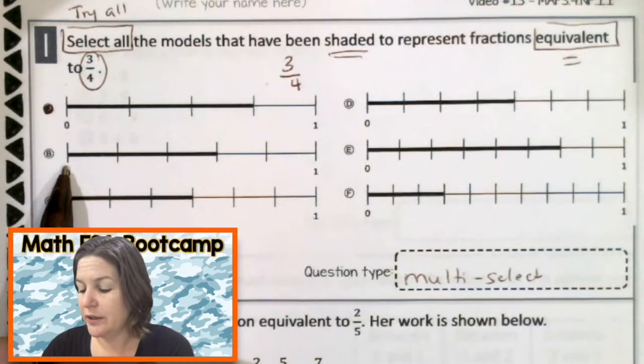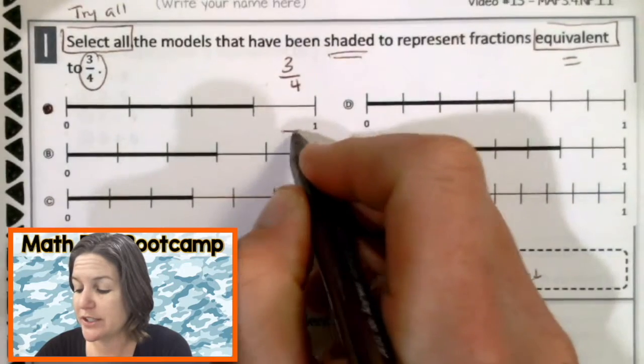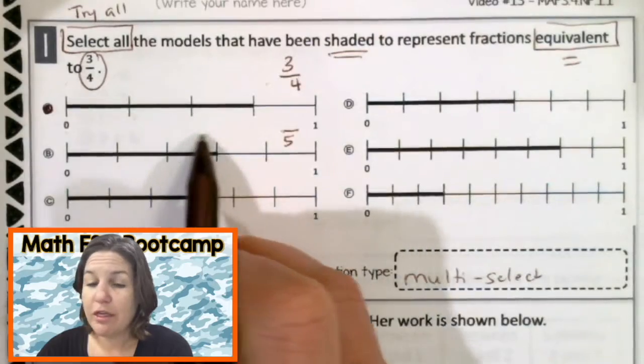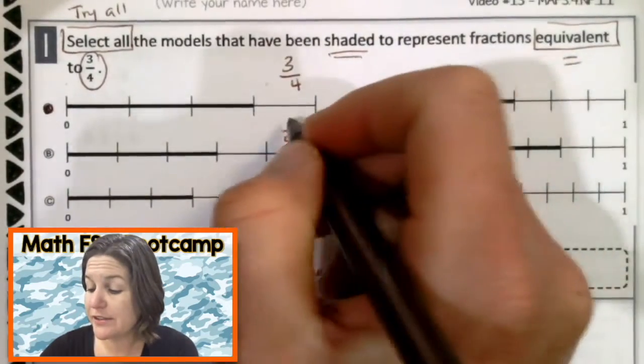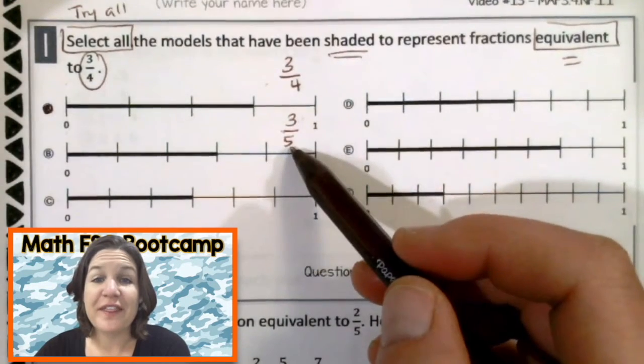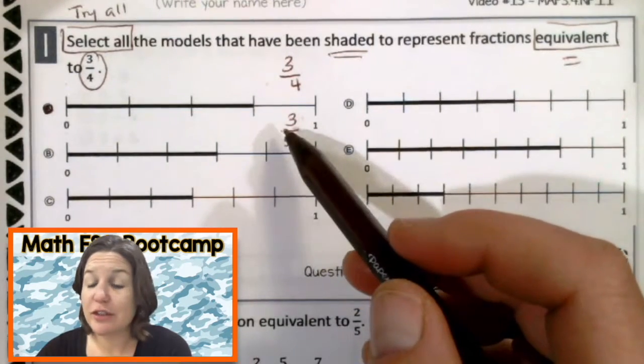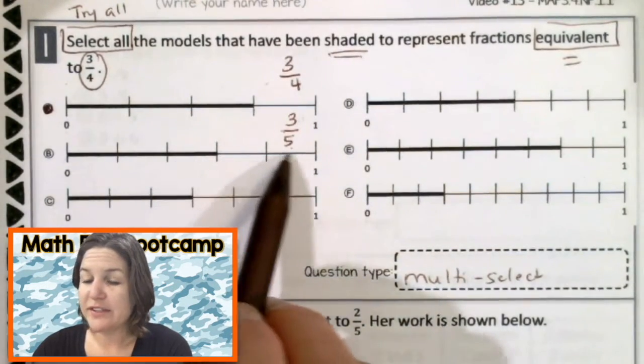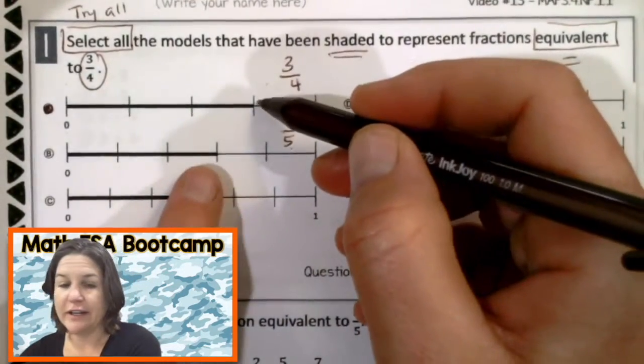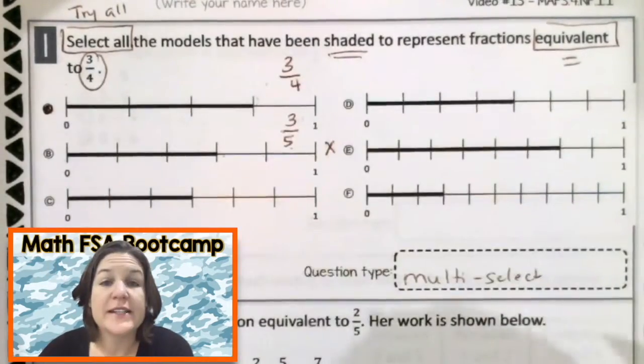For the next one, we've got one, two, three, four, five jumps. That means our denominator is five. The shaded part is one, two, three. So our numerator is three, which makes the fraction three-fifths. And three-fifths is not equivalent to three-fourths. You can even see here. They are the same distance between zero and one. And if you're looking right here, three-fourths goes farther than three-fifths. So no, it is not equivalent.